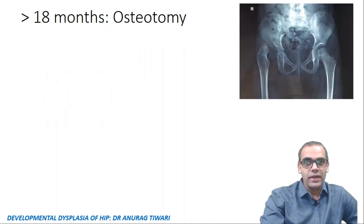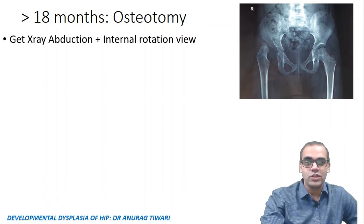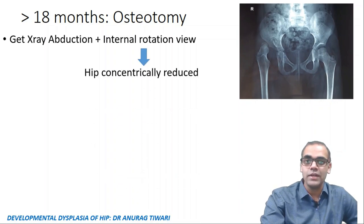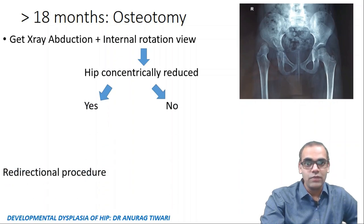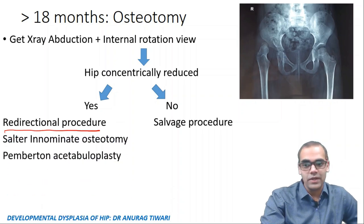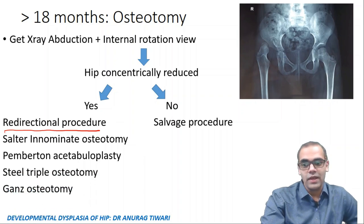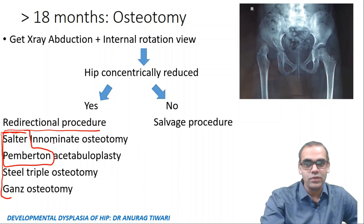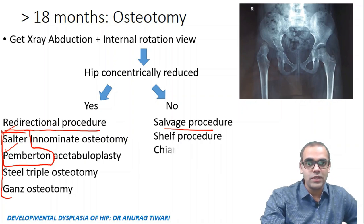Beyond 18 months, osteotomy is required. The choice of osteotomy is based on an X-ray abduction and internal rotation view. If the hip is concentrically reduced in this view, we do redirectional osteotomy. If not, salvage procedures are done. Redirectional osteotomies include Salter innominate osteotomy, Pemberton osteotomy, Steel triple innominate osteotomy, and Ganz osteotomy. Salvage procedures include the Shelf procedure and Chiari osteotomy.